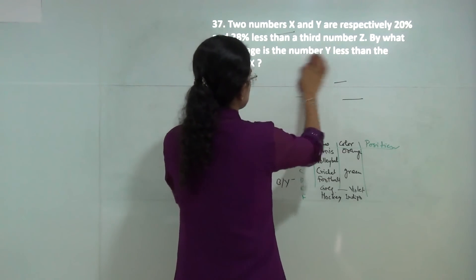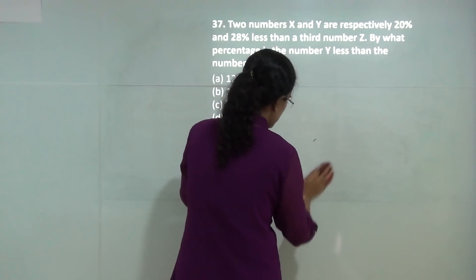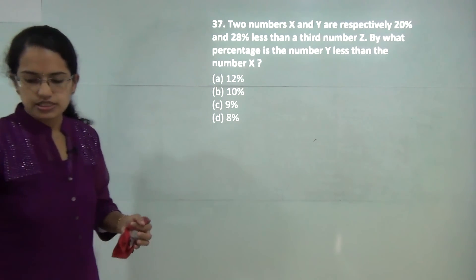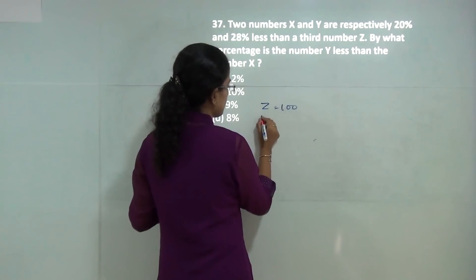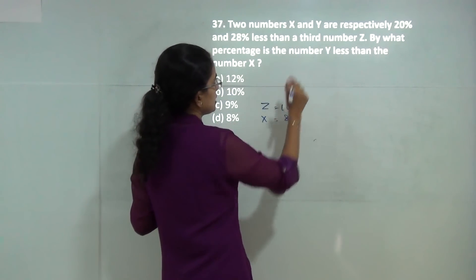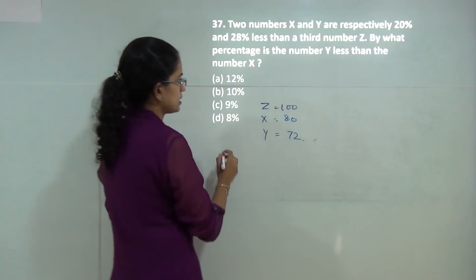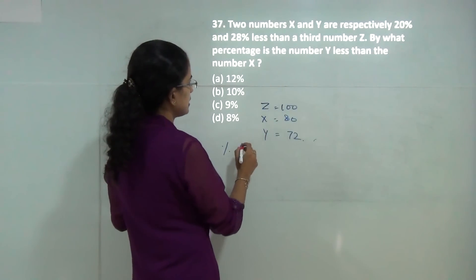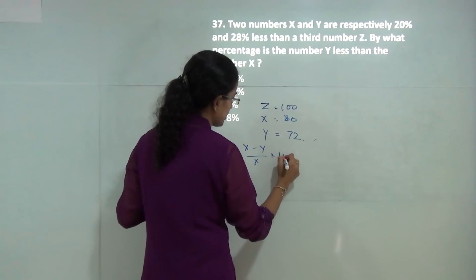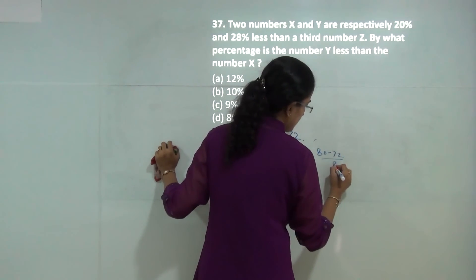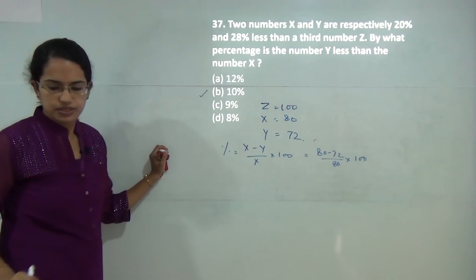In the next question, consider Z to be 100. X would be 80, that is 20 percent less than Z, and Y would be 72, that is 28 percent less than Z. The percentage by which Y is less than X is (X minus Y) divided by X times 100, which is (80 minus 72) divided by 80 times 100 equals 10 percent. So B is the correct answer.